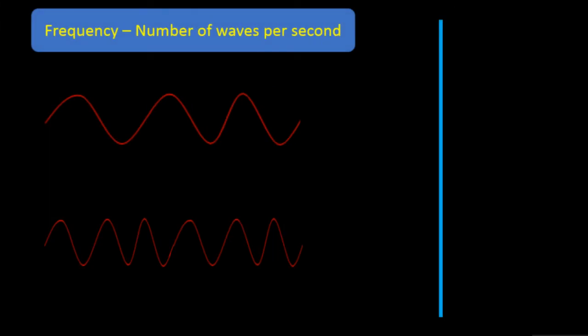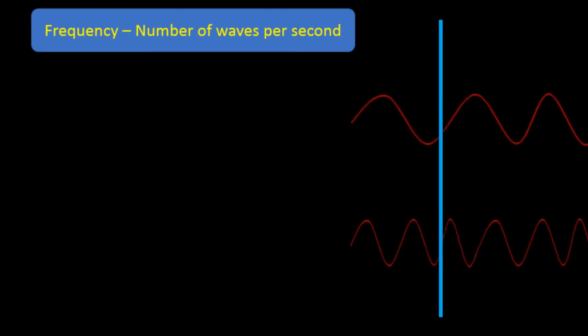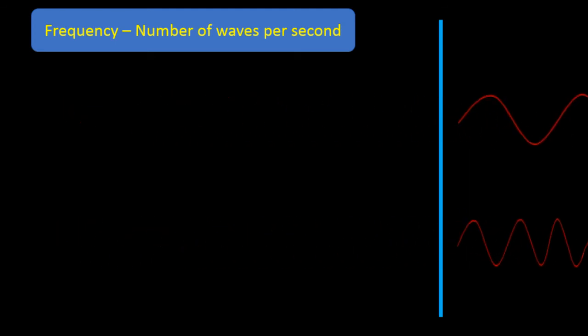In this lesson we talk about frequency, which is defined as the number of waves per second. We have two examples here. You can see the vibration at the bottom has far more waves than the vibration at the top. When they travel through that blue line, we can calculate the number of waves per second that pass through that point.